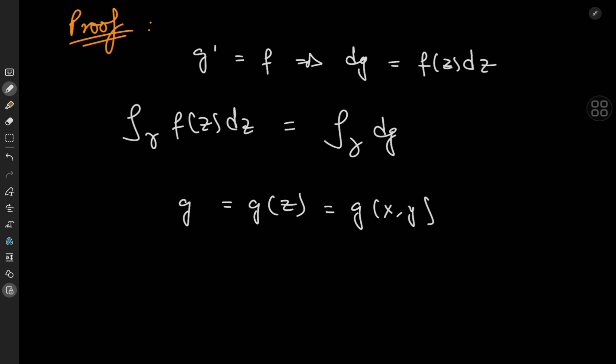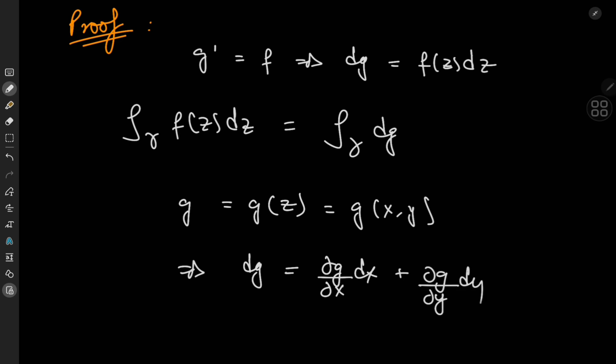Since g is analytic, we can write dg as (∂g/∂x) dx + (∂g/∂y) dy in the familiar way from multivariable calculus. And if you're concerned that g is a complex-valued function rather than a real-valued multivariable function...